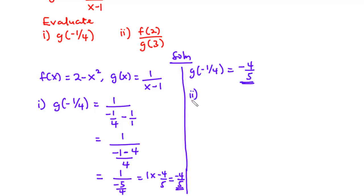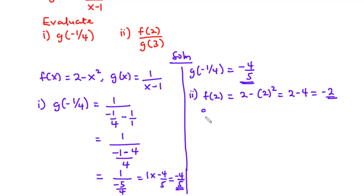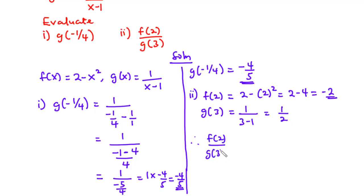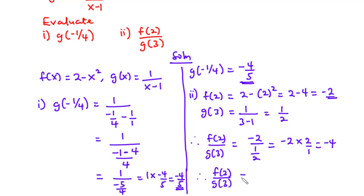For part ii, we find f(2) divided by g(3). f(2) = 2 minus 2 squared = 2 minus 4 = negative 2. g(3) = 1 over 3 minus 1 = 1 over 2. Therefore f(2) divided by g(3) = negative 2 divided by 1 over 2, which is negative 2 times 2 over 1, equal to negative 4. Therefore f(2) divided by g(3) equals negative 4.